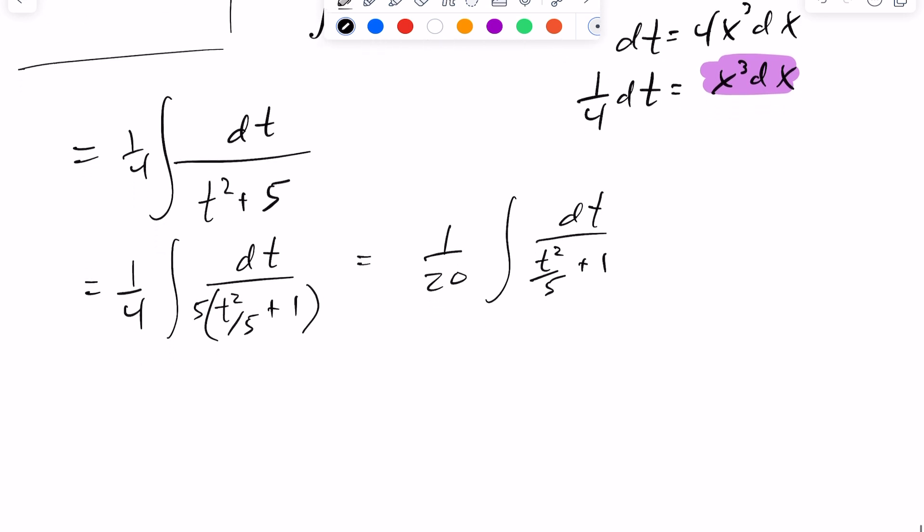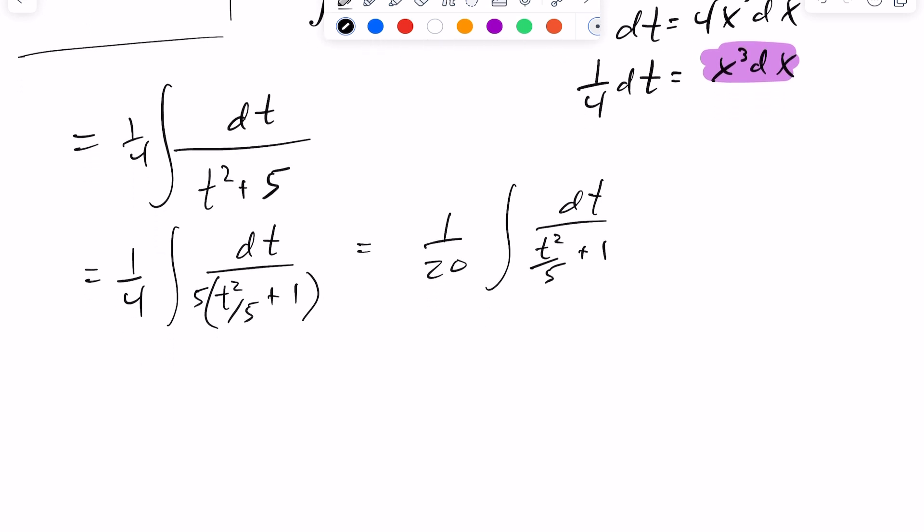So now, when I integrate this here, I'm going to do a second substitution. Now we have this almost in the proper form. Let me just rewrite this. This would be 1 over 20, integral of dt. I'll rewrite this as t over the root of 5 squared plus 1.